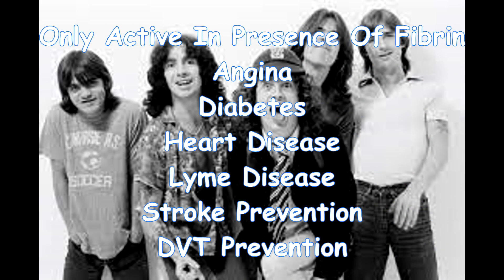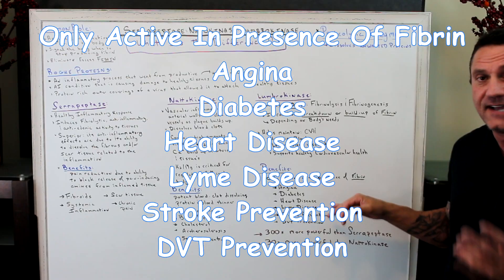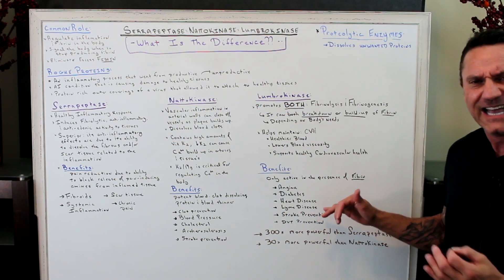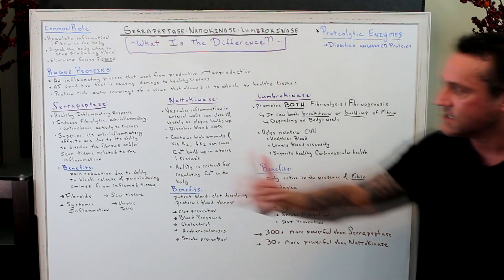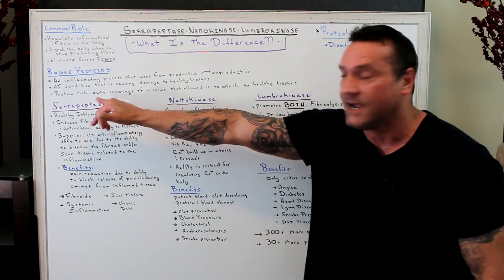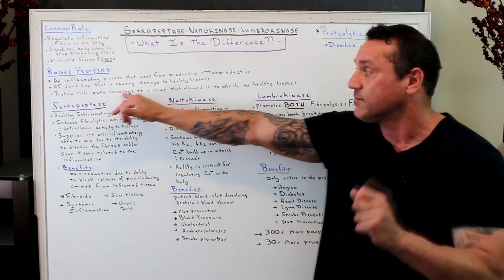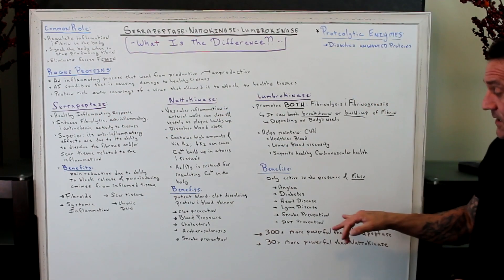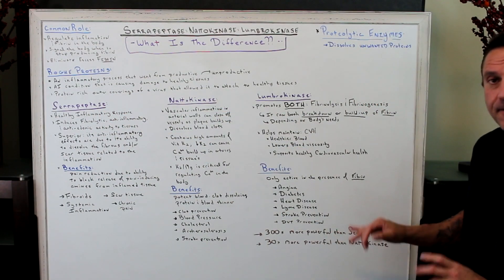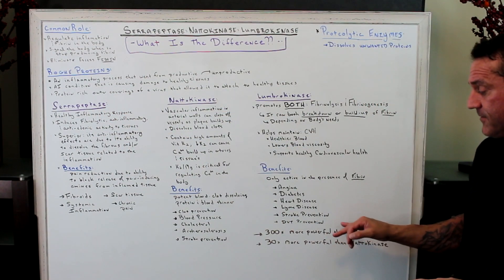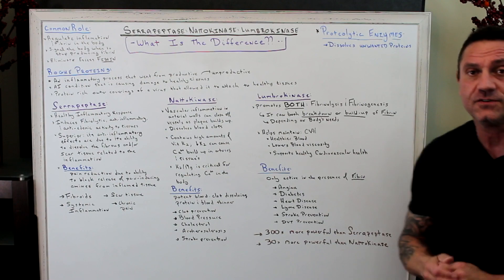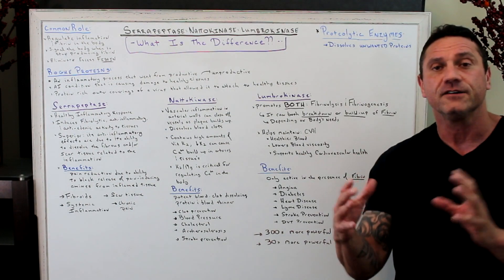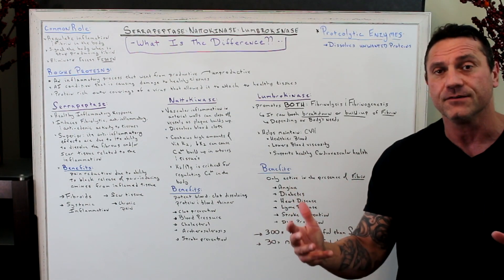Lumbrokinase is great for angina, diabetes, heart disease, and Lyme disease — because of the protein-rich coverings of a virus. It also helps with stroke prevention and DVT prevention, making it phenomenal for overall cardiovascular health.